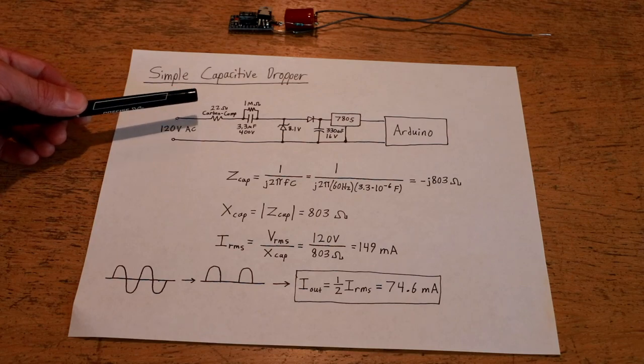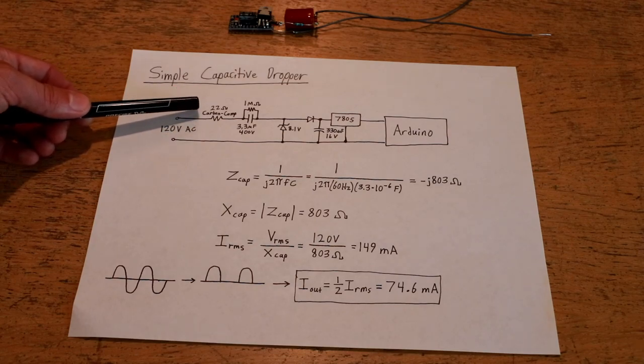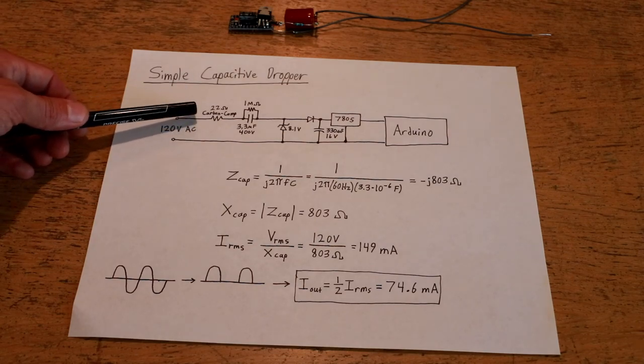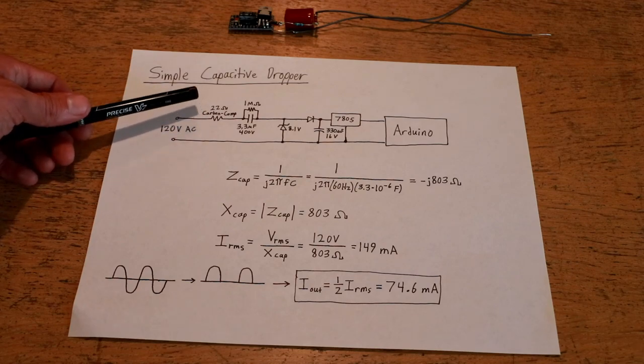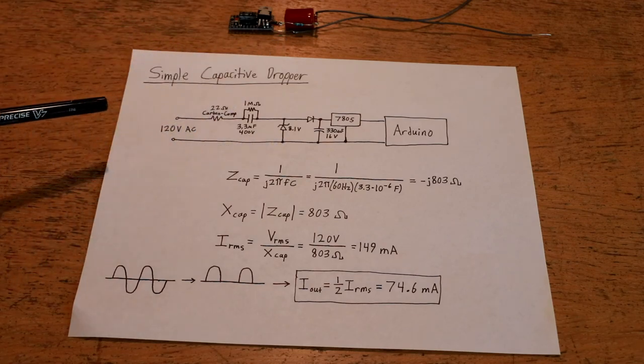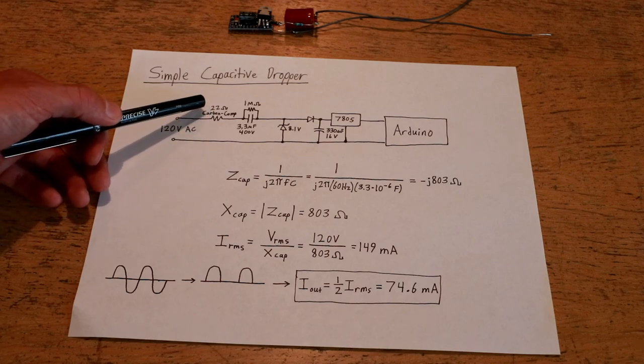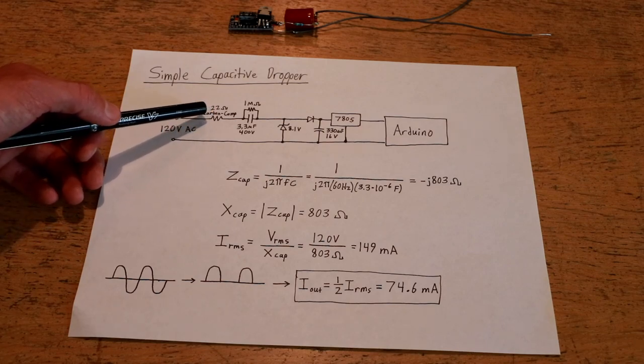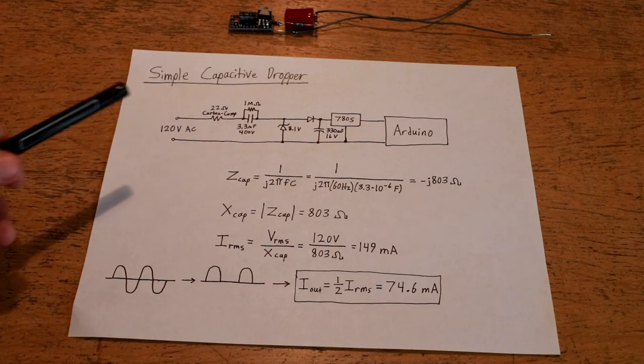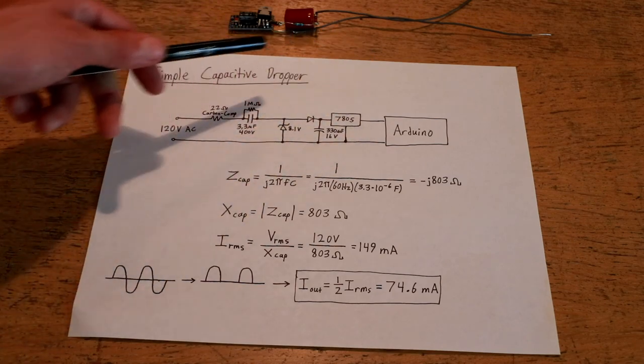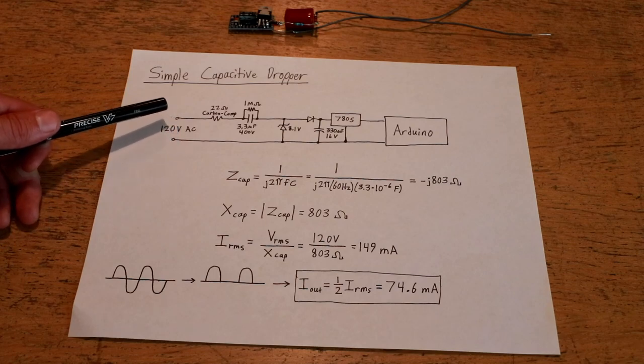You want to use something like carbon composition so that it withstands large pulses. A metal film resistor may work for a little while, but after enough insertion and unplugging cycles you will find that most metal film resistors will actually burn open as a result of the transient pulse current. So that's really the overview of how you assemble this capacitive dropper on a conceptual level.